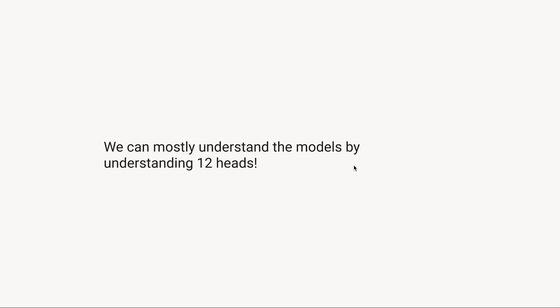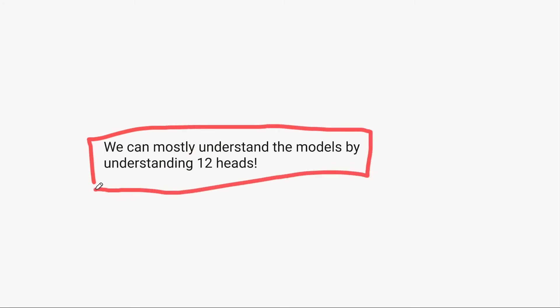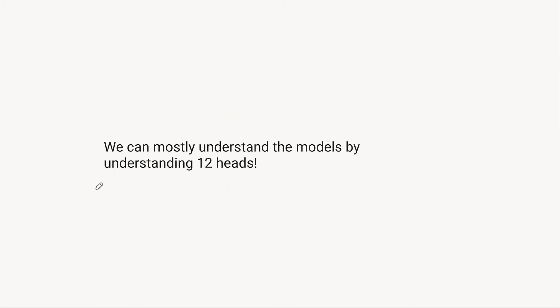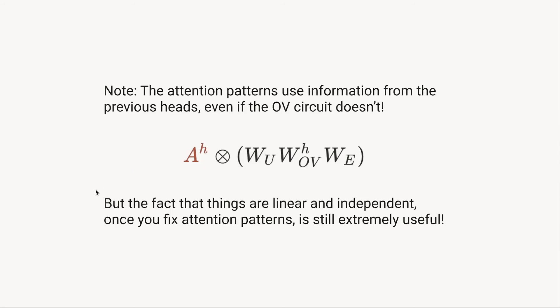So we can mostly understand the model by understanding the behavior of 12 attention heads — the layer-two heads. Their attention patterns are influenced by earlier attention heads, but if we understand those 12 heads, for instance by empirically understanding their attention behavior and their OV circuits as a starting point, we'd understand the model's behavior. It's really important to keep in mind that the attention patterns in later layers are nonlinear and also contain potentially lots of effects from previous attention heads.